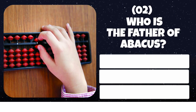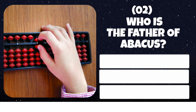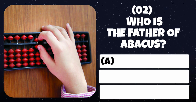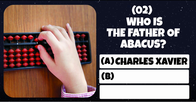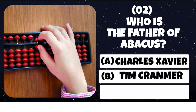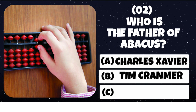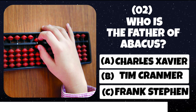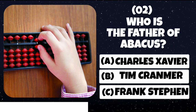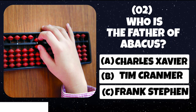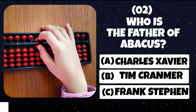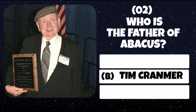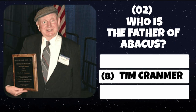Question number 2. Who is the father of abacus? Option A: Charles Xavier. Option B: Tim Cranmer. Option C: Frank Steven. Correct answer is Tim Cranmer.